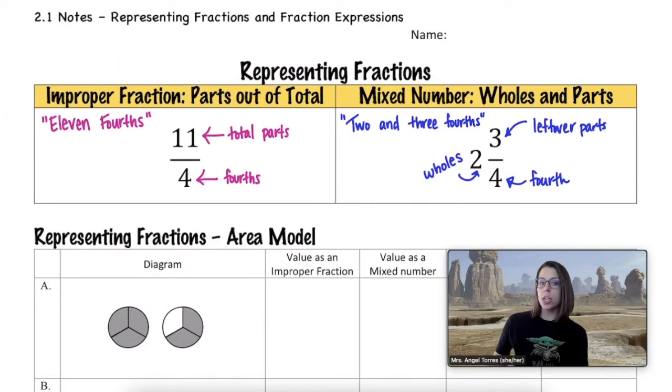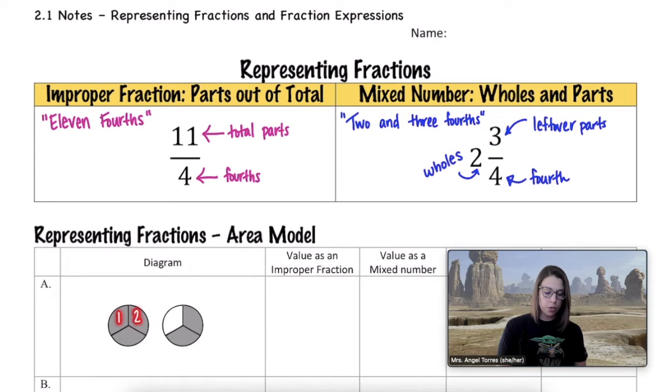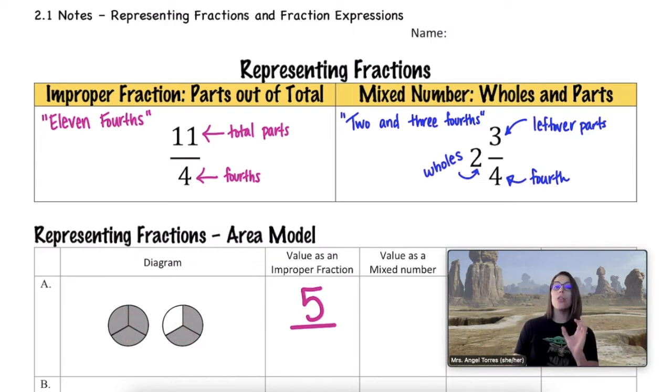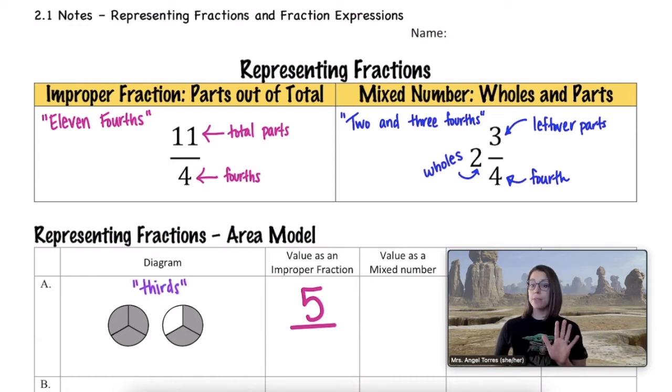The improper fraction is going to be how many total parts are in this case shaded in, and what's the size of each part. So first we just count. I see one, two, three, four, five total shaded in parts, and that means our numerator here is five. We have five total shaded parts. Now how large is each part, meaning how many parts are in each hole? Well, you see, hopefully, you see three total parts in the first, and three total parts in the second. We call that, in math, thirds. So in diagram A, we have five total parts, and each part is one third. Therefore, the improper fraction here would be five thirds.